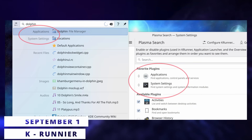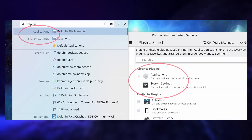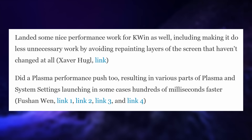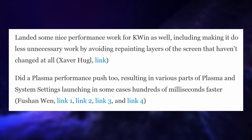In KDE land, KRunner got some love in preparation for Plasma 6, with the ability to manually configure results to be displayed in the order you want. You'll be able to reorder them in the settings so you always get what you look for first. This tool also got some performance improvements and gained the option to start hybrid sleep if your system supports it. KWIN, the window manager and compositor, should perform better as well and won't repaint layers of the screen that haven't changed, resulting in more power efficiency. Various parts of Plasma and the settings will also open a few hundred milliseconds faster.